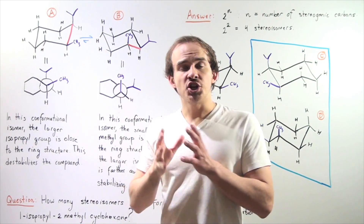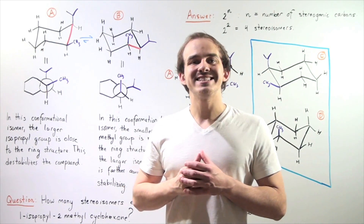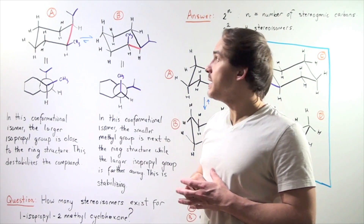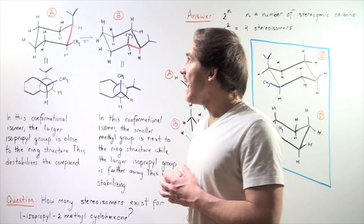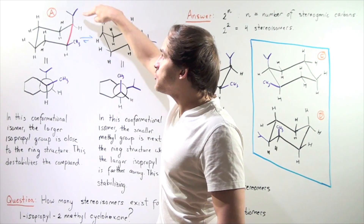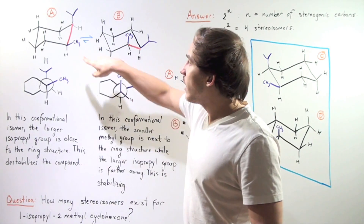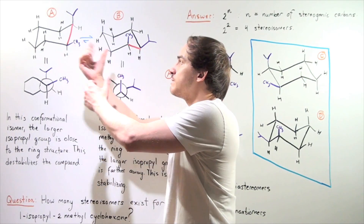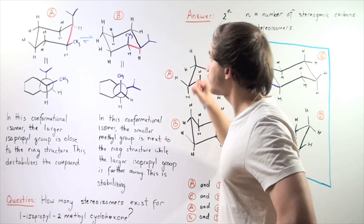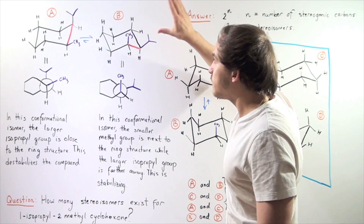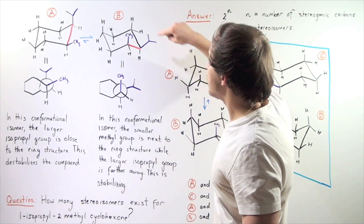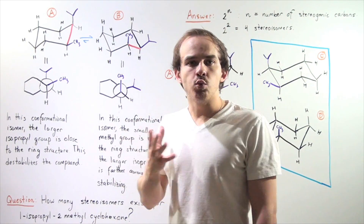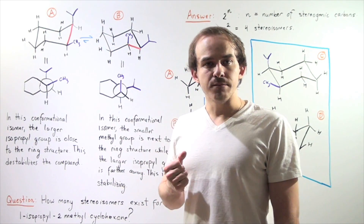Which one of these chair conformations is more stable — conformation A or conformation B? In conformation A, the axial position is filled with the isopropyl group, while the equatorial position is filled with the methyl group. When the interconversion takes place, the isopropyl fills the equatorial position and the methyl group fills the axial position.